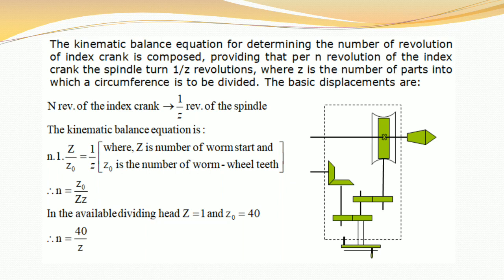The kinematic balance equation is: n × (1/Z₁) × (Z₁/Z₀) = 1/N, where Z₁ is the number of worm starts and Z₀ is the number of worm wheel teeth. This means n = Z₀ / (Z₁ × N). In the available dividing head, Z₁ = 1 and Z₀ = 40, which gives the formula n = 40 / N.